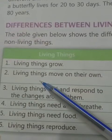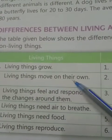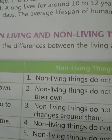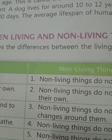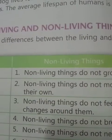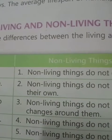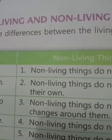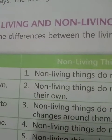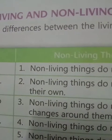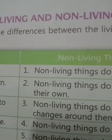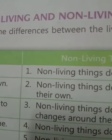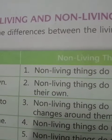Second, living things move on their own, while non-living things do not move on their own. Living things can move by themselves, whereas non-living things cannot. For example, a dog can walk on its own because a dog is a living thing. A chair cannot move by itself because the chair is a non-living thing — it only moves when a person places it from one place to another.